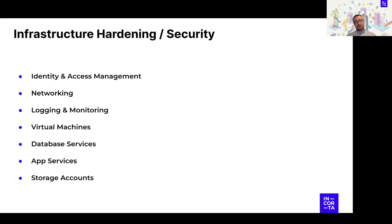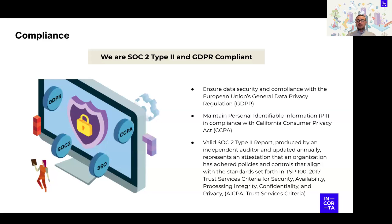Next is infrastructure hardening and security — efforts we undertake every quarter to reassess different aspects of our infrastructure security hardening: identity and access management, networking, logging and monitoring, machine configuration, database services, application services, storage accounts, and more. And lastly, compliance: we are SOC 2 Type 2 compliant and GDPR compliant. These reports are available upon request for your InfoSec team to review.